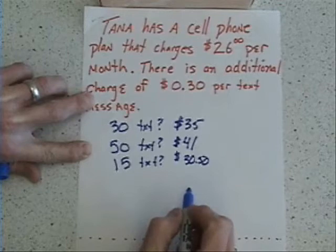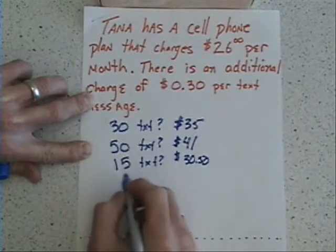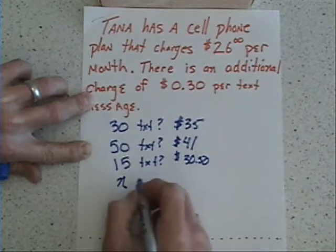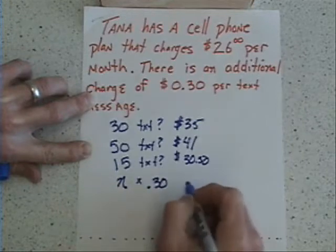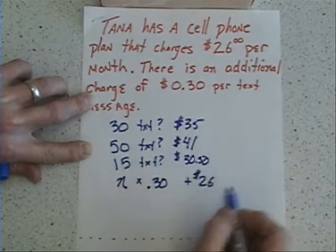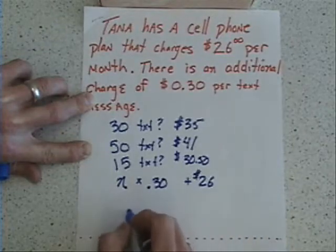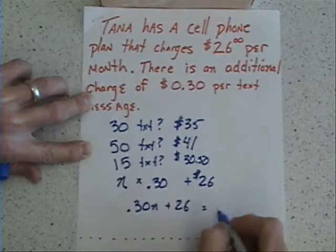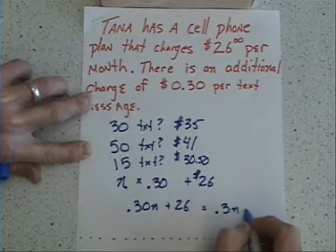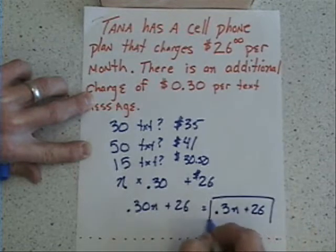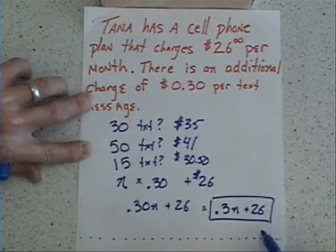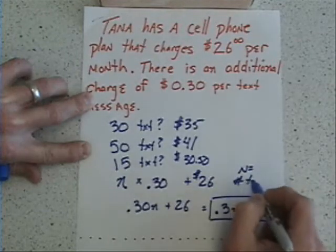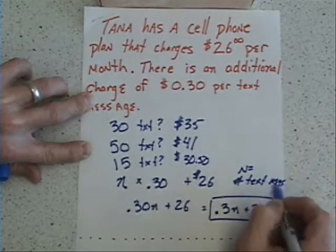What did we do every single time? We calculated the number of text messages sent — let's call it n, because it could really be any value. Every time we multiplied that n by $0.30, and then added $26. I can simplify that into the expression .30n + 26, or more neatly, .3n + 26. This equation represents how much it would cost Tanya to pay her cell phone bill, where n equals the number of text messages she sends.